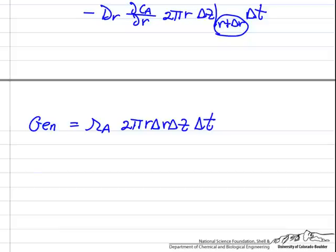Now we have all the terms for the mass balance. We basically have to substitute in to the balance and simplify. We won't go through all the steps of simplification. The important things are: once we substitute in, we're going to divide by delta t, and then take limits as delta r, delta z, and delta t all get small, so we end up with a differential equation.